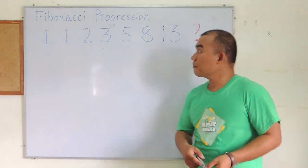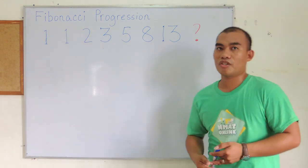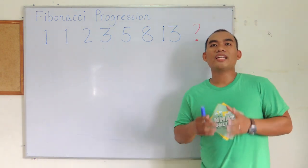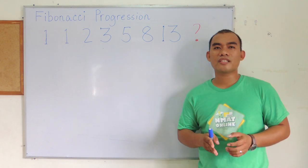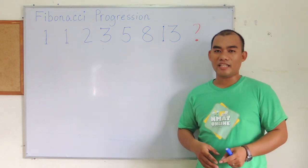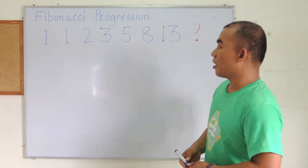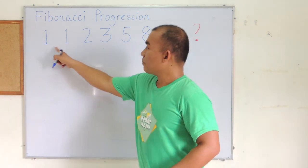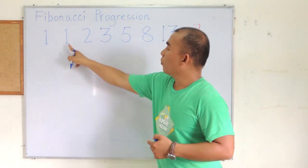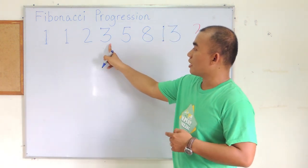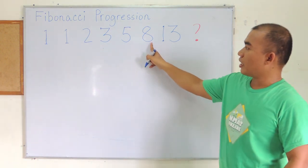Now we have here an example of a Fibonacci progression. A Fibonacci progression is a special series where the last two terms are added to obtain the next term. For example: 1 plus 1 equals 2; 1 plus 2 equals 3; 2 plus 3 equals 5; 3 plus 5 equals 8.